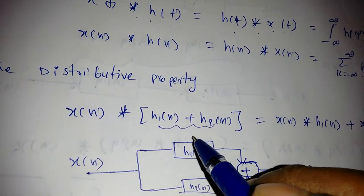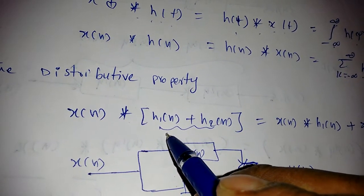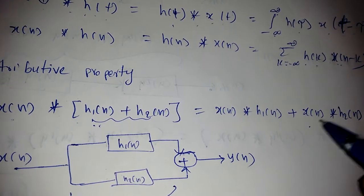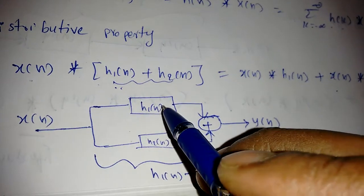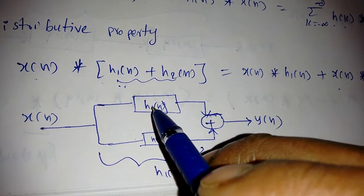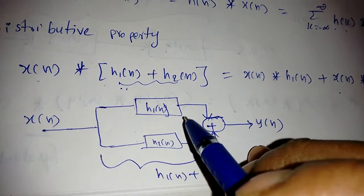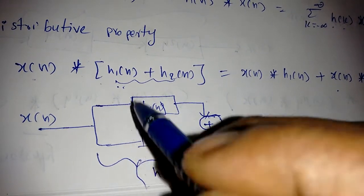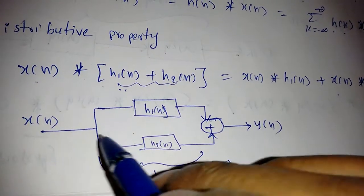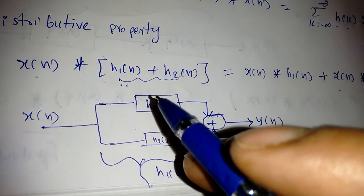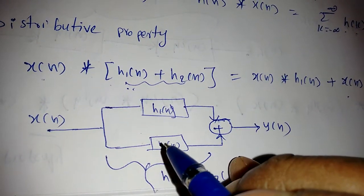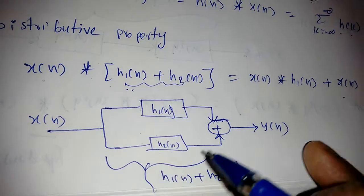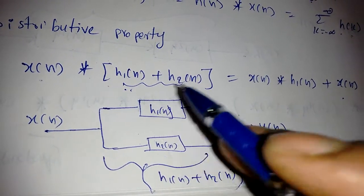Next is the distributive property. Suppose X of N is convolved with the sum of two impulse responses H1 of N plus H2 of N — this equals X of N convolved with H1 of N, plus X of N convolved with H2 of N. Using a block diagram: when H1 of N and H2 of N are in parallel and their outputs are summed, the overall impulse response is simply H1 of N plus H2 of N. Whenever there are parallel connections, we add the impulse responses.